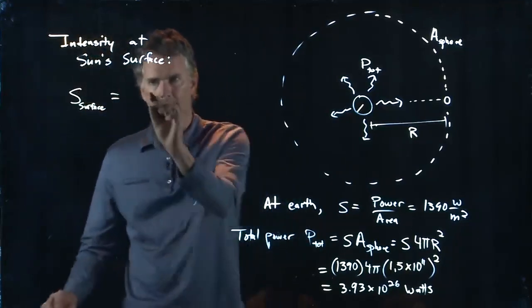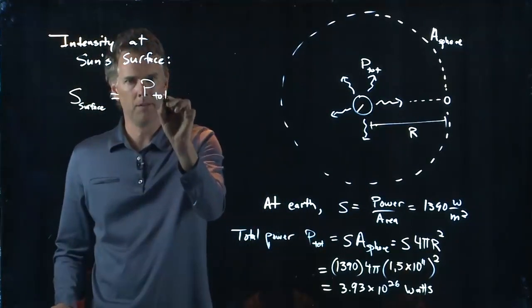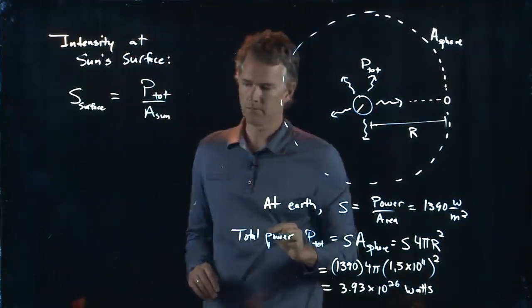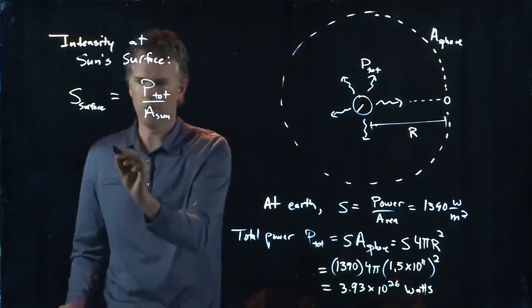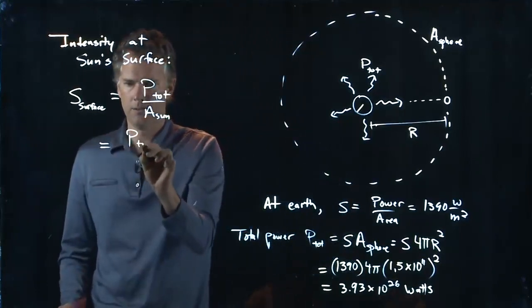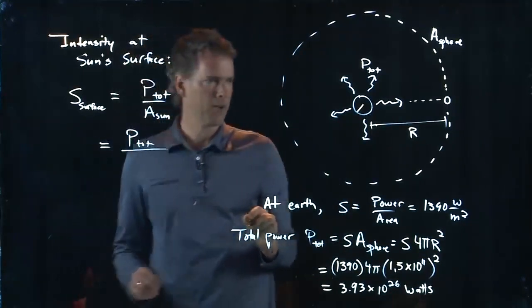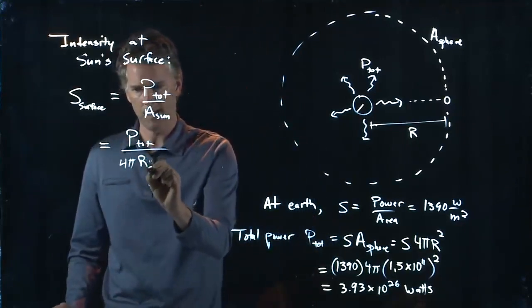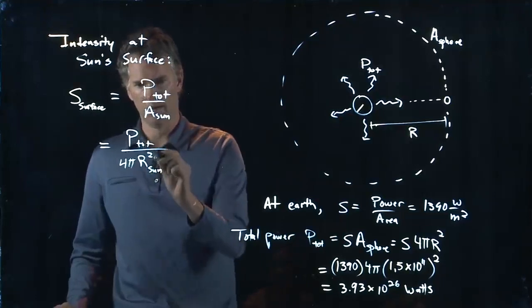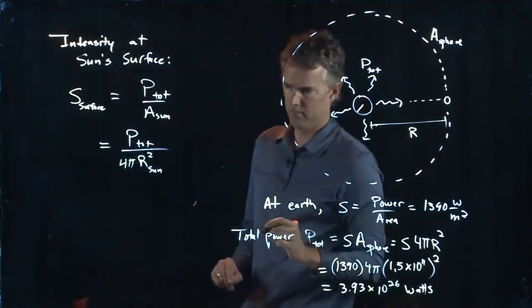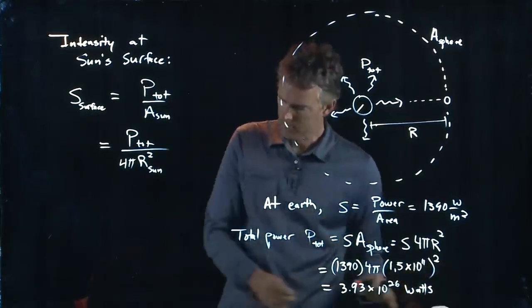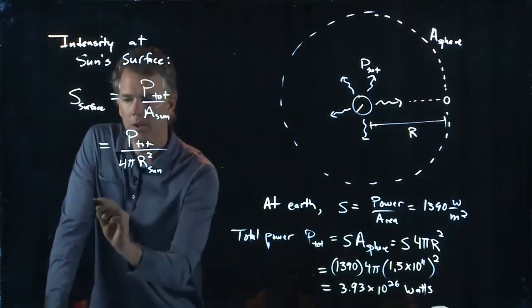Because it's just going to be that total power divided by the area of the sun. And we know the total power. And the area of the sun is 4 pi times the radius of the sun squared. And so now, again, you can look up that number. And let's punch it in right here.